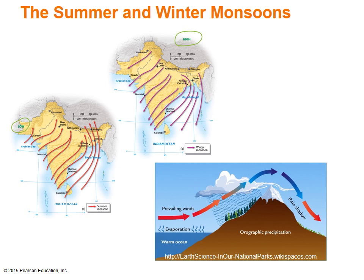Another climatic phenomenon is orographic rainfall that occurs over the western Ghats. Orographic rainfall is the rain produced from the uplifting and cooling of moist air from the ocean as it heads over mountains. This is why the southwestern tip of India receives huge amounts of rain during the summer monsoon.